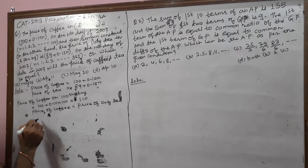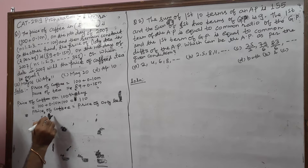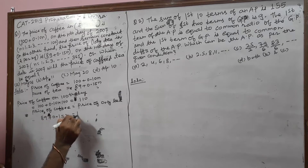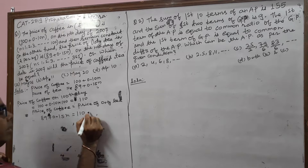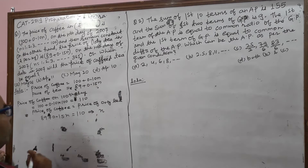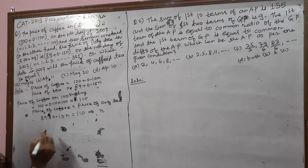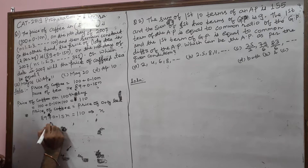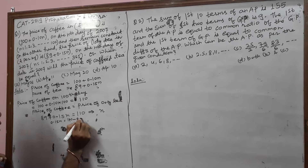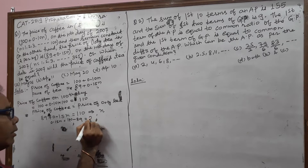Setting price of tea equal to price of coffee: 89 + 0.15N = 110. On that condition, we get 0.15N equal to 110 minus 89, which equals 21.